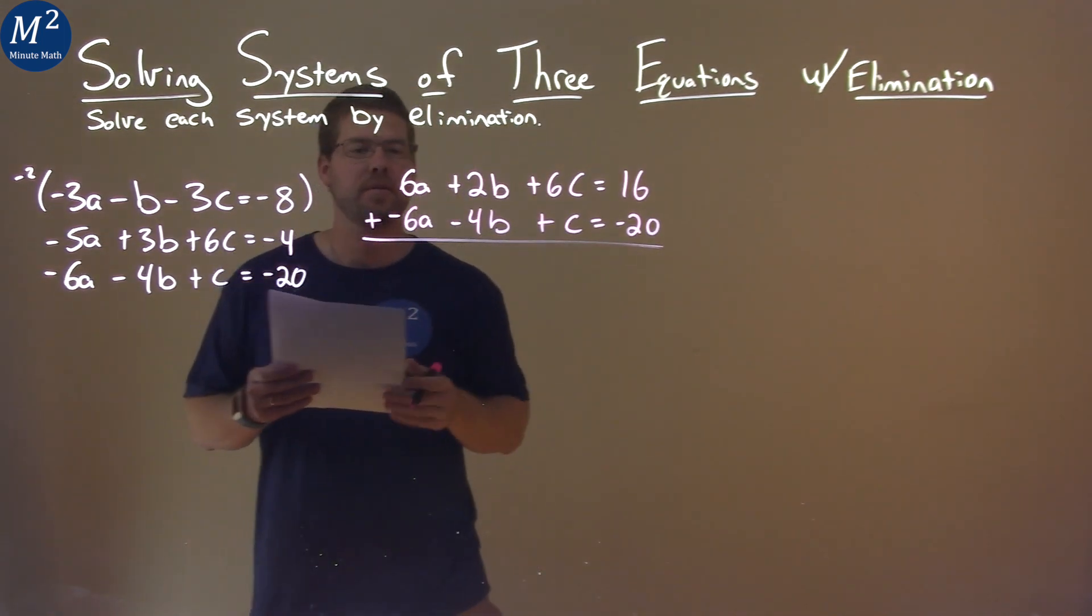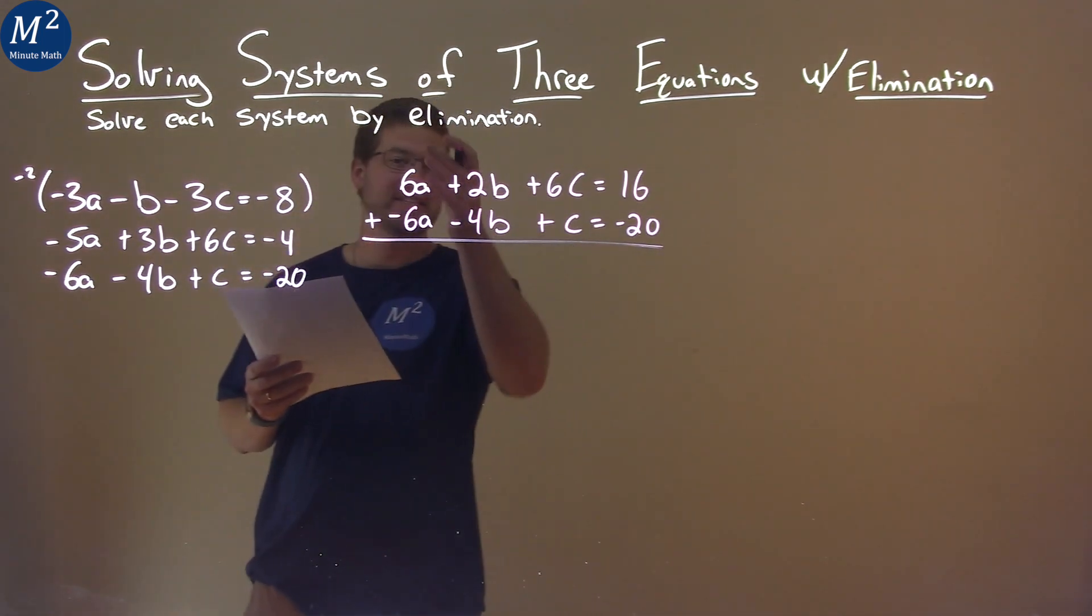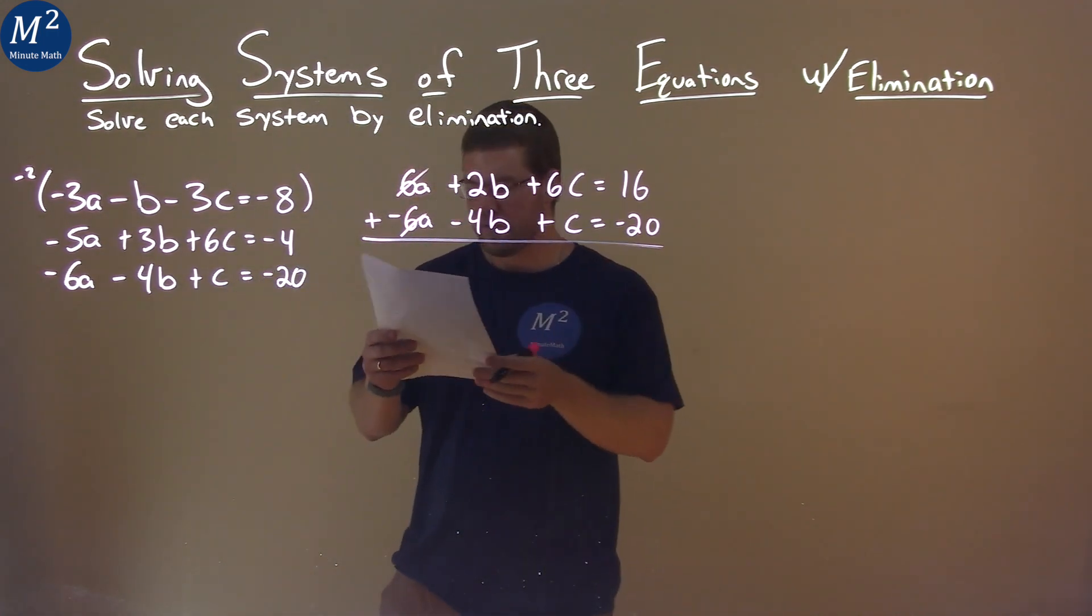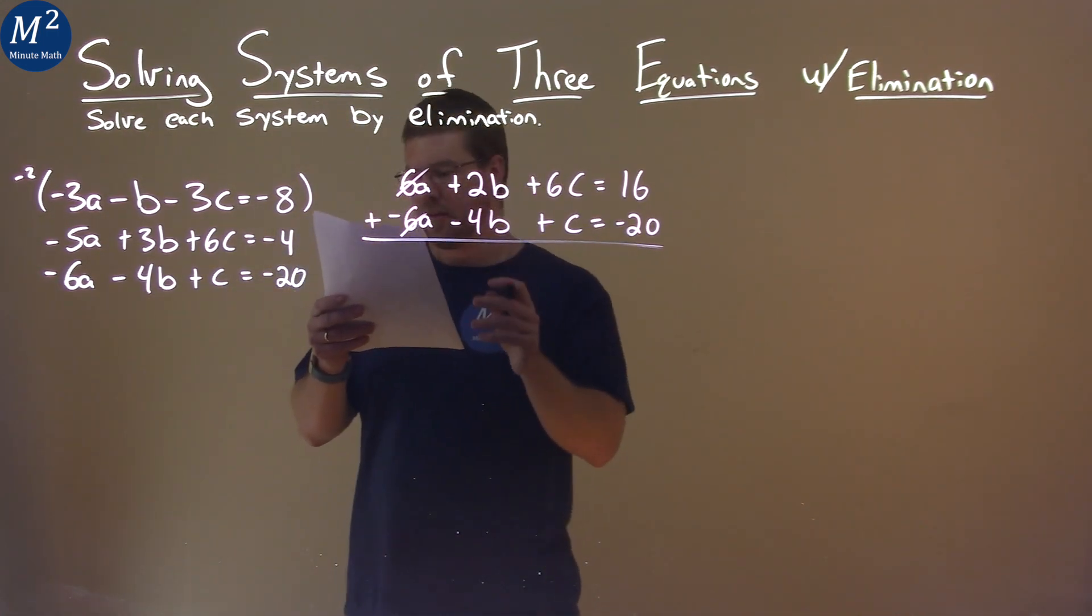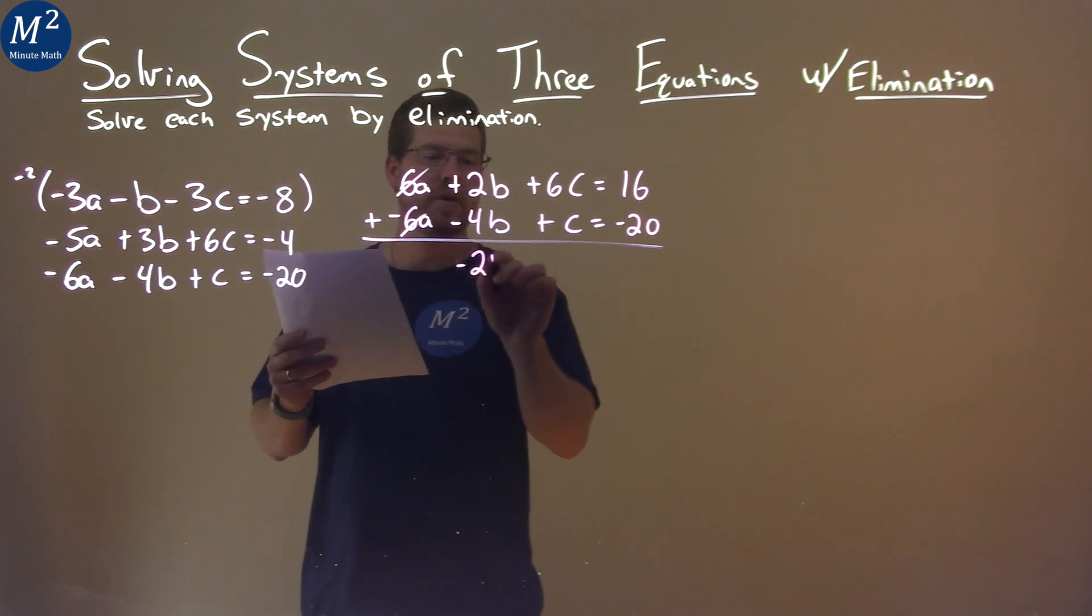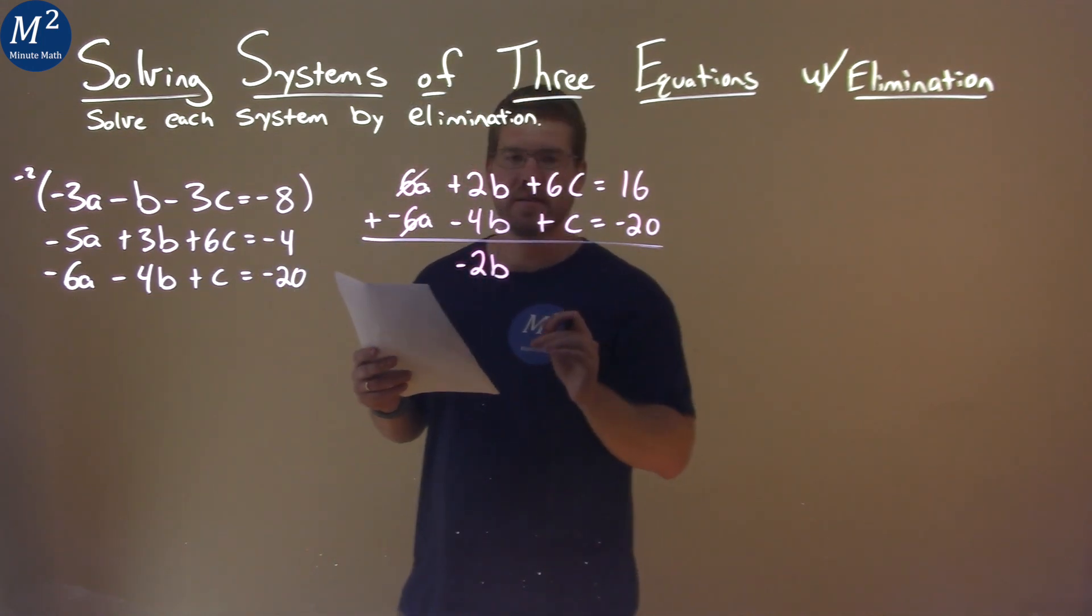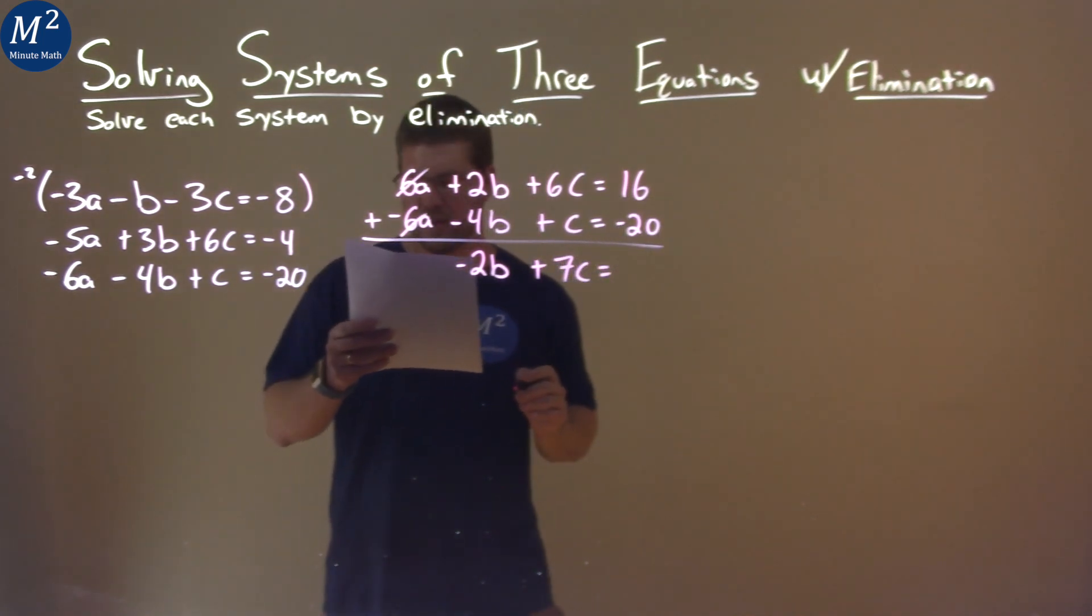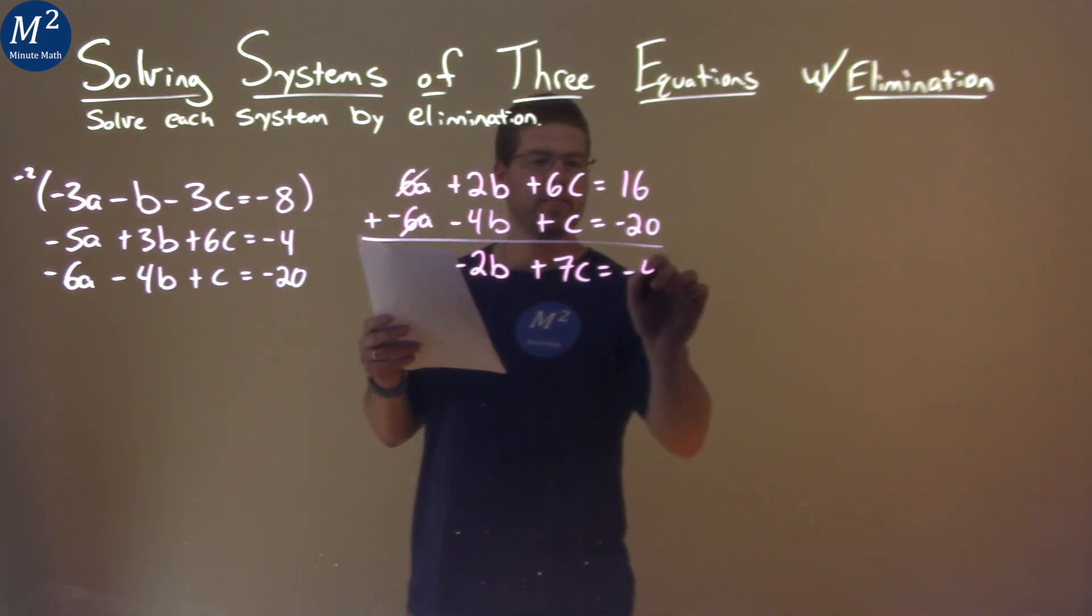We add them together. 6a plus negative 6a, they eliminate, hence the process. 2b plus negative 4b is negative 2b. 6c plus c is 7c. And 16 plus negative 20 is negative 4.